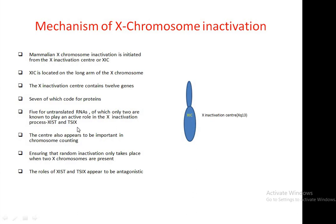These are two important genes that play vital roles in the mechanism of X inactivation in females. This center also appears to be important in chromosome counting, ensuring that random inactivation only takes place when 2 X chromosomes are present. Which chromosome is inactivated in females — whether it comes from paternal or maternal origins — does not mean the whole process runs non-randomly. The roles of XIST and TSIX appear to be antagonistic, meaning they play opposite roles.